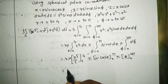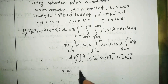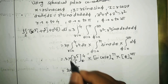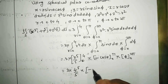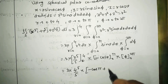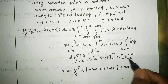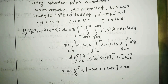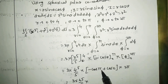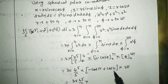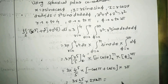Evaluating each part: the r-integral gives [r⁵/5] from 0 to 4 = 4⁵/5. The θ-integral gives [−cosθ] from 0 to π = −cos(π) + cos(0) = 1 + 1 = 2. The φ-integral gives 2π. So the result is 3 × (4⁵/5) × 2 × 2π.